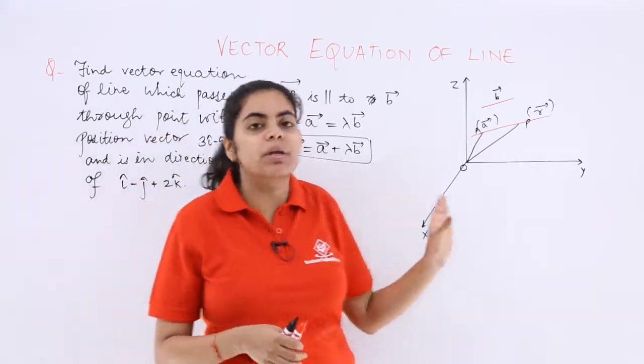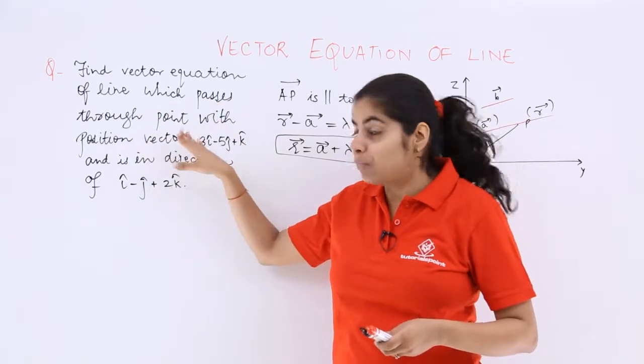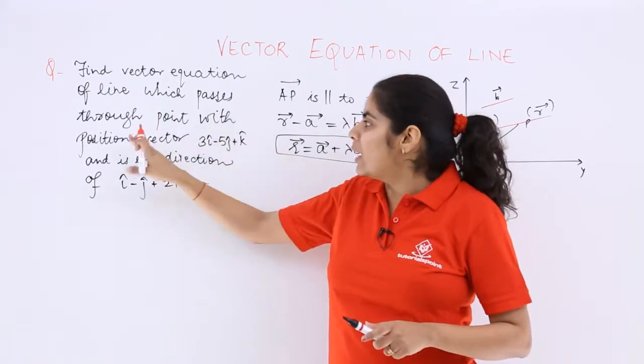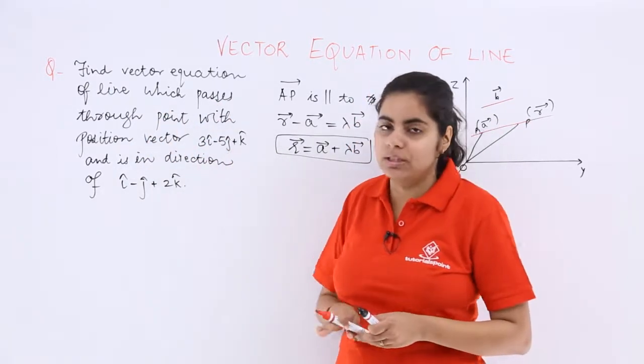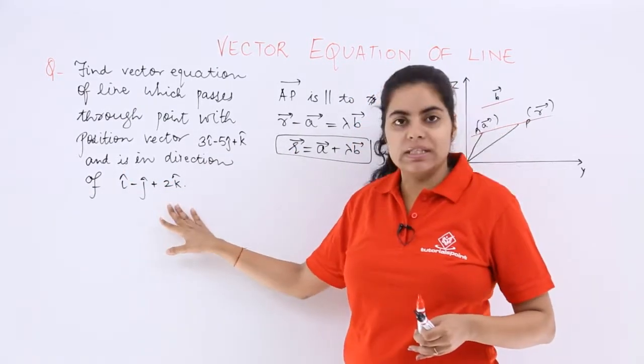So how is this formula useful for a question? Let's see. Find the vector equation of a line which passes through the point with the position vector. So one position vector is given to you and is in the direction of this.